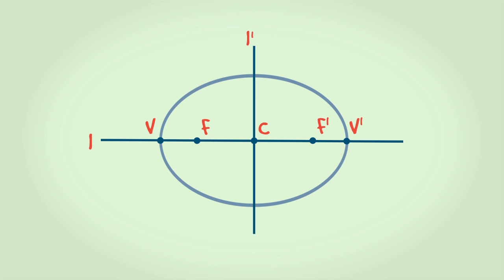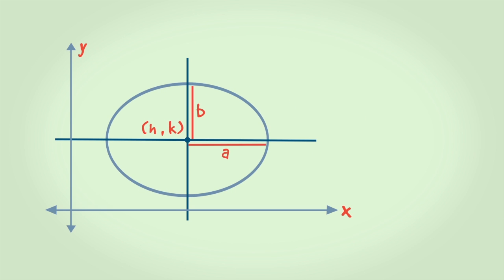La recta L', que pasa por C y es perpendicular a L, se conoce como eje normal. El eje normal corta la curva en dos puntos, A y A'. El segmento A, A', se llama eje menor. La ecuación de la elipse de centro H, K, y el eje focal paralelo al eje X es... y si el eje focal es paralelo al eje Y, será...